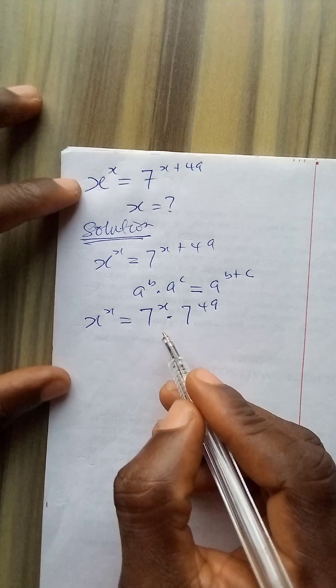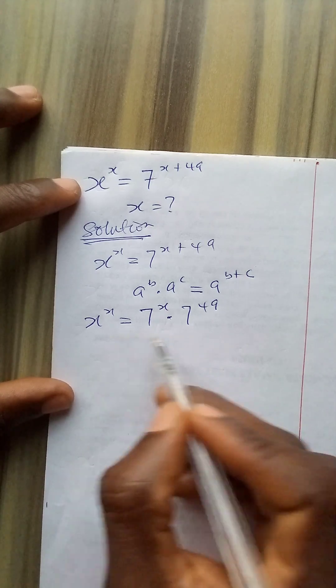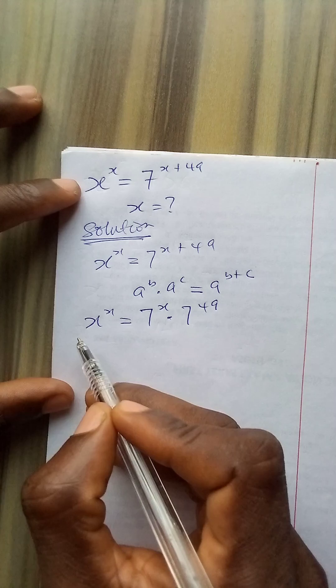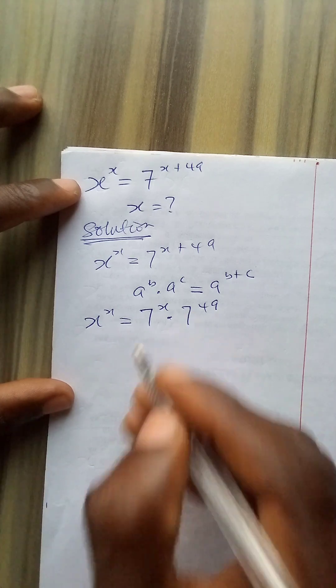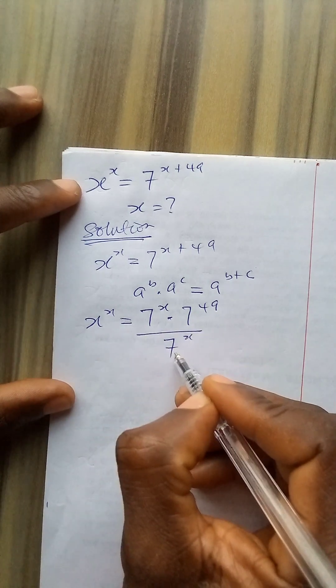Now let's remember that we are asked to find the value of x. To do that we need to make x the subject. To make x the subject we have to divide both sides by 7 to power x.